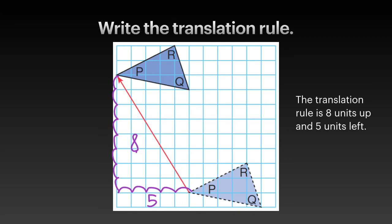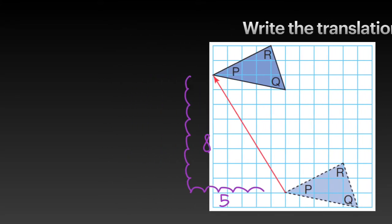The translation rule is 8 units up and 5 units left.